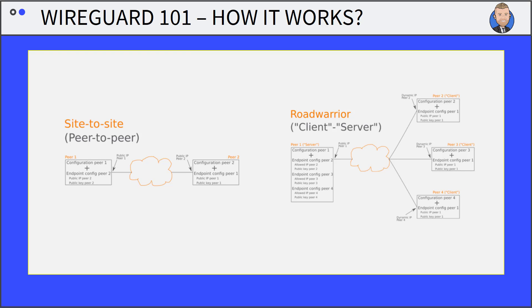That's just an overall summary. Now we will start by actually doing a demonstration on the process of installing WireGuard, setting it up, and initiating a connection on a local computer to the VPN server.